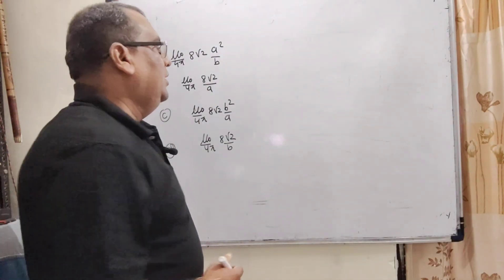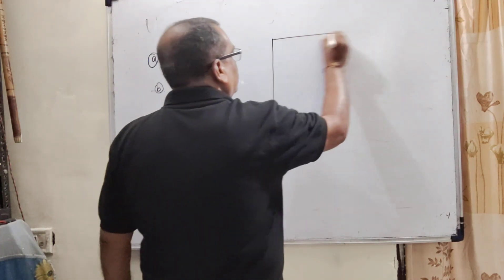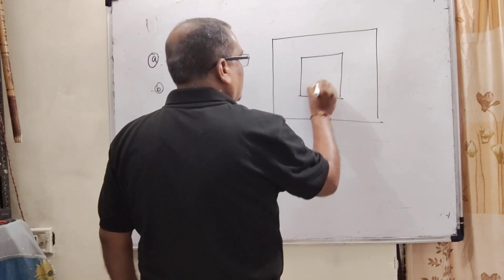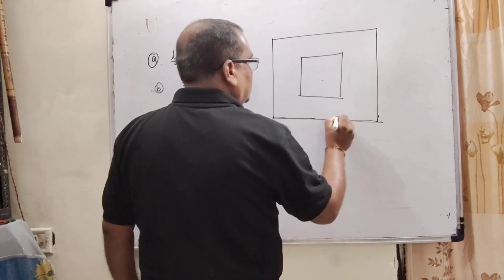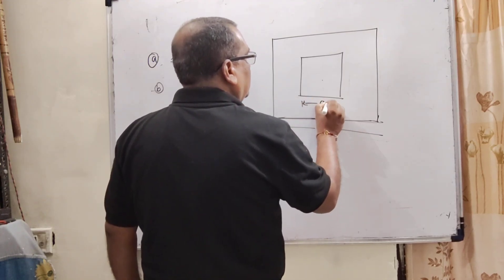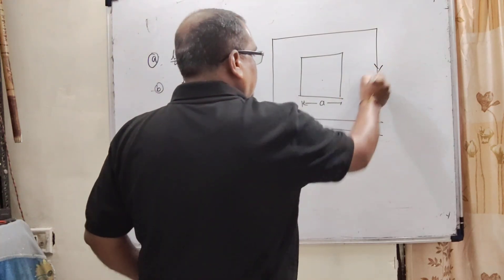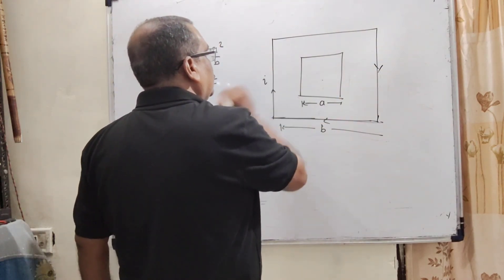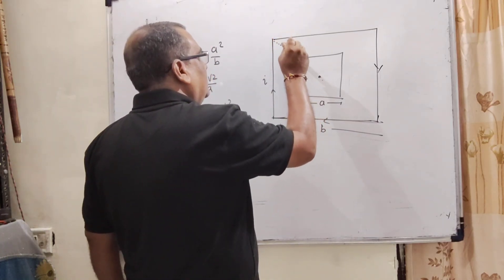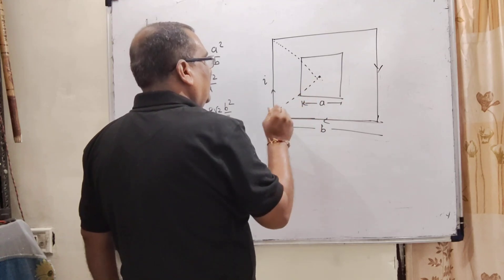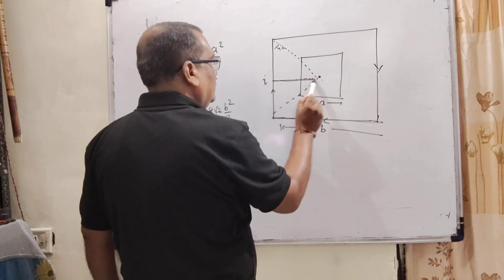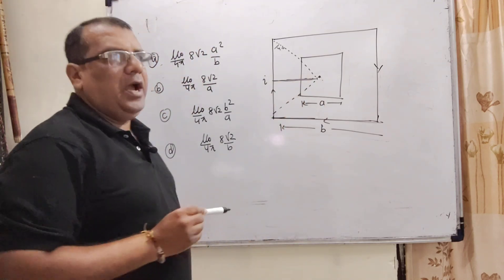Okay, what is the question? Here we have given two square loops, concentric, which means your center is same and same plane. Outer square loop side is B and inner square is A. Here current I flows in outer loop. From the center, this is making angle that is 45, let's see.